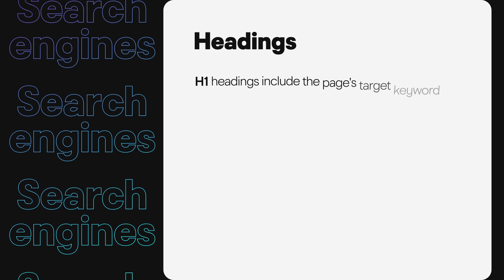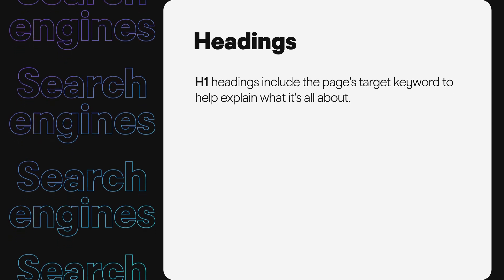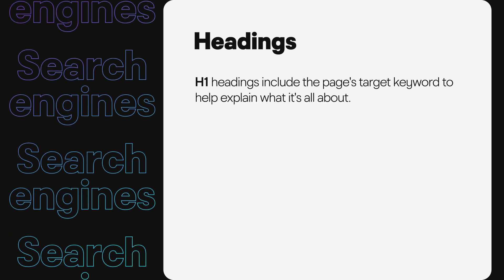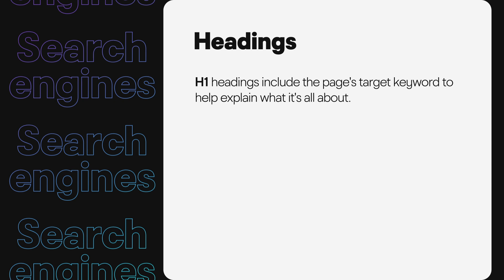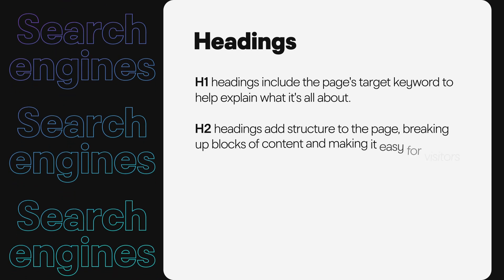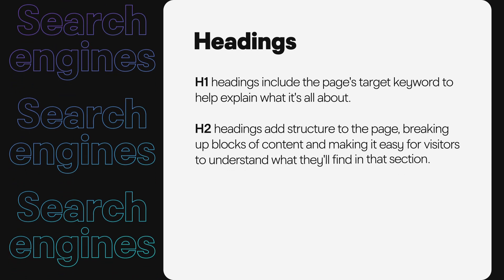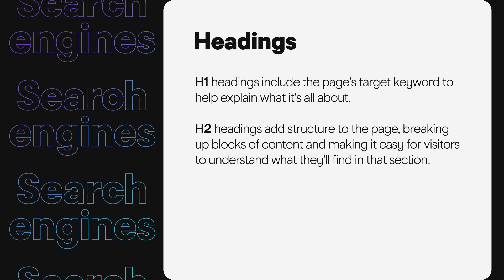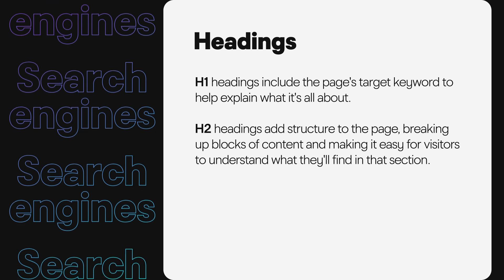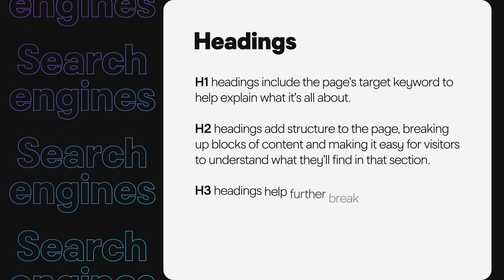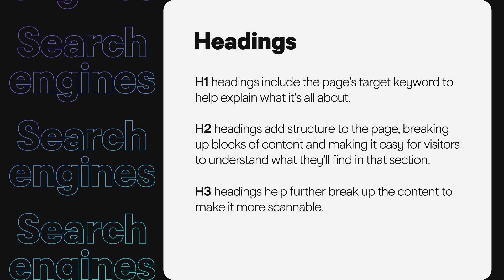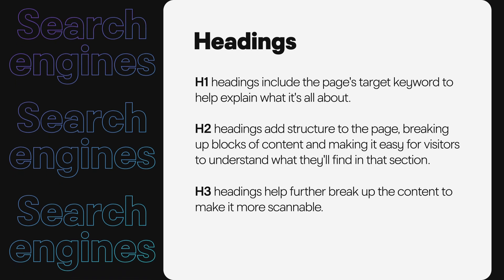H1 headings include the page's target keyword to help explain what it's all about — this might be the headline on a blog page, for example. H2 headings add structure to the page, breaking up blocks of content and making it easy for visitors to understand what they'll find in that section, while H3 headings help further break up the content to make it more scannable. Though headings might not make or break your SEO efforts, they do help search engines understand what's on the page and enhance the user experience.